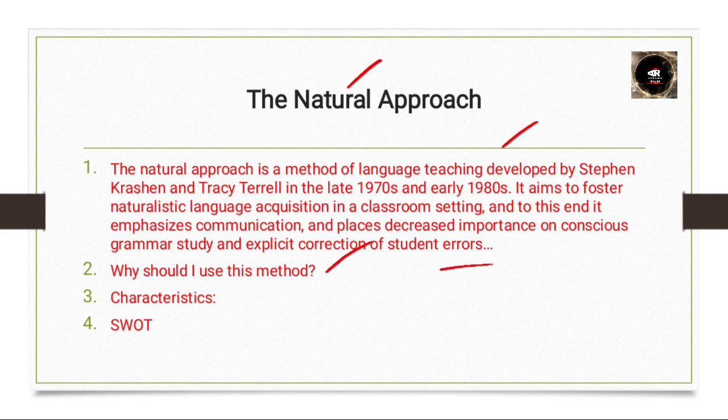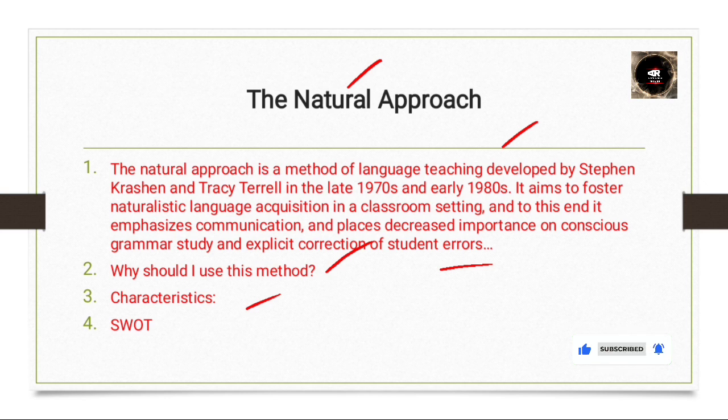The third reason is that Krashen stressed that teachers should be free to try the method and that it could work alongside their existing classroom practice. Finally, the fourth point is that Krashen demonstrated the method to many teacher groups so that they could see how it would work in practice. Now, what are the characteristics of the natural approach?